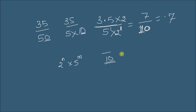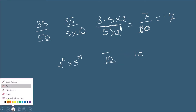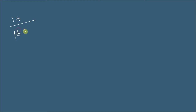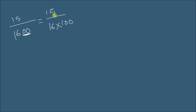Now another example: 15 divided by 1600. The denominator 1600 ends in two zeros, so we can write it as 16 multiplied by 100. We will place the decimal after 2 digits from the right, so 15 divided by 1600 becomes 0.15 divided by 16.